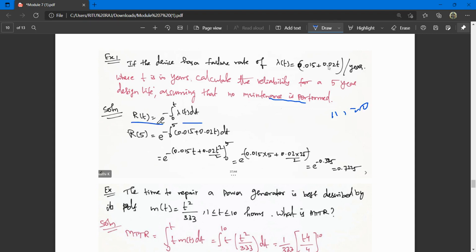R(t) equals e to the power minus integral from 0 to t of lambda(t) dt. Here it is 5 years, so replace t by 5. E to the power minus integral 0 to 5 of the given function dt. When you integrate this, you get 0.7225.